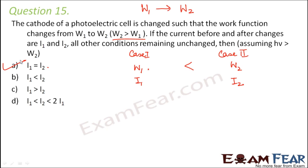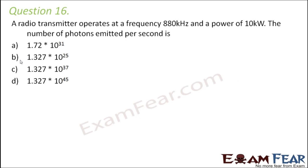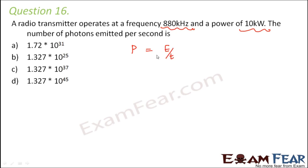Question number 16: A radio transmitter operates at a frequency of 880 kHz and a power of 10 kW. The number of photons emitted per second is? The frequency is given, and power is energy per unit time. The energy of a photon is h×ν (h mu). Since there are many photons, we assume N photons, so total energy is N×h×ν.